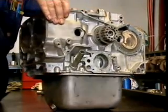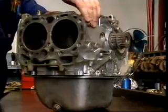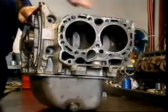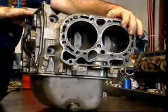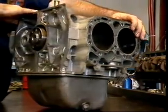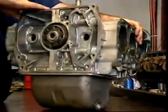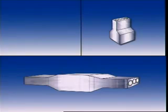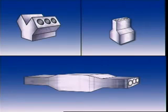Horizontally opposed engines have two banks of cylinders, 180 degrees apart, on opposite sides of the crankshaft. A useful design when little vertical space is available. It's shorter than a comparable in-line engine, but wider than a V-type.